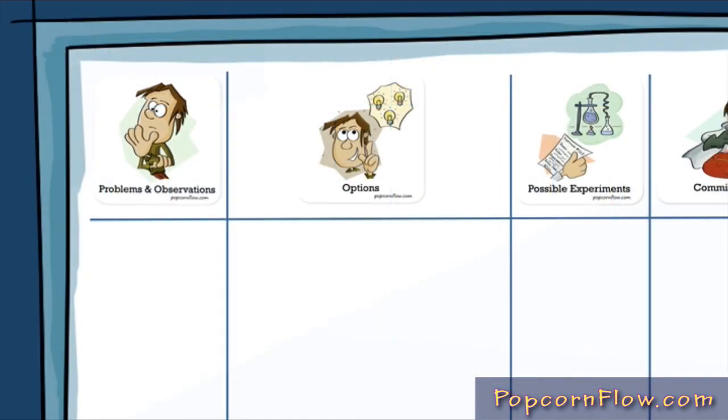The first column is called Problems and Observations. If you try to accomplish anything in your life, I'm sure you'll face many obstacles along the way. Or you may be presented with an opportunity and you want to explore it.